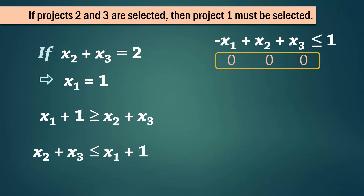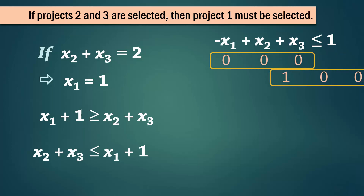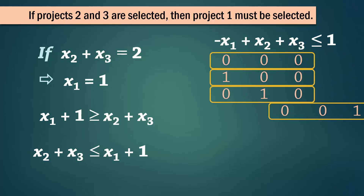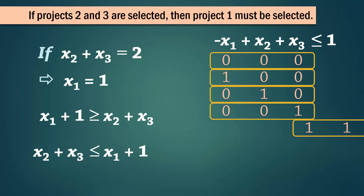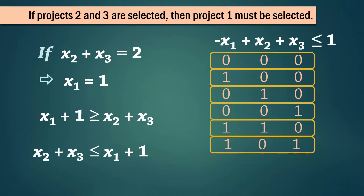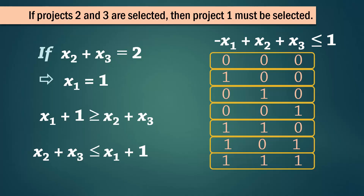So we can select none of the 3, or select only project 1, or project 1 with only 2, or project 1 with only 3. We can also have all 3. However, we cannot have projects 2 and 3 without project 1. And that concludes this video.